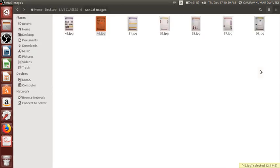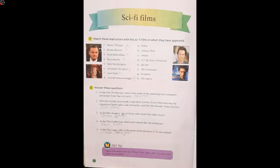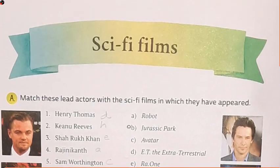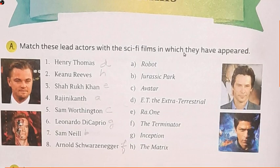Starting with page number 52 — sci-fi films. Just now I was talking about films only, and we have it here. Sci-fi films are basically movies made by famous persons or famous movies related to entertainment. Match these lead actors with the sci-fi films in which they have appeared. The very first one: Henry Thomas — ET the Extraterrestrial. Then Keanu Reeves — The Matrix. Followed by Shah Rukh Khan — Ra.One, which I hope most of you would have seen.